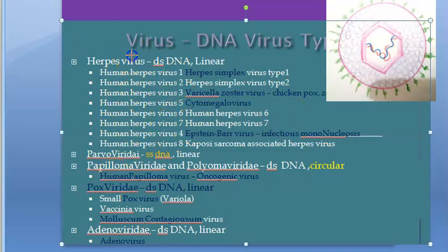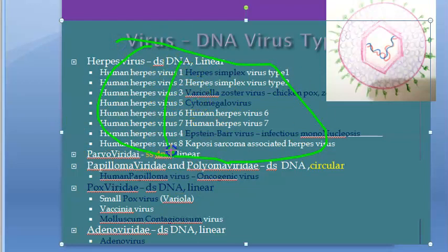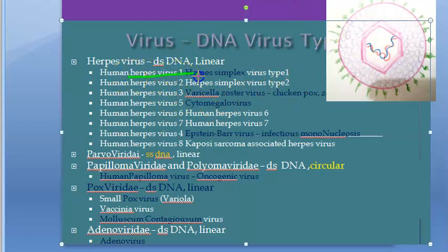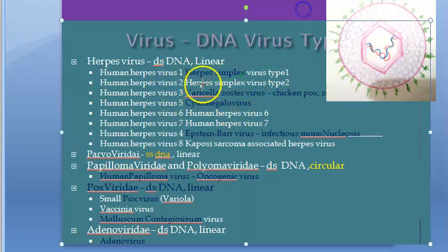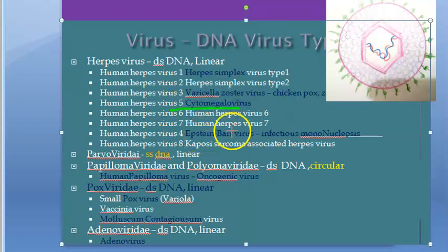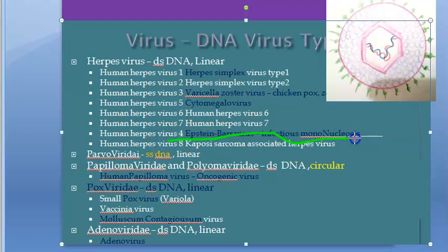Now let's look at herpes virus. There are 8 human herpes viruses, numbered 1 to 8. Human herpes virus 1 and 2 are herpes simplex viruses. Human herpes virus 3 is varicella zoster virus. Human herpes virus 5 is cytomegalovirus. Human herpes virus 4 is Epstein-Barr virus, which causes infectious mononucleosis.